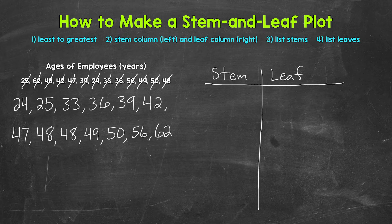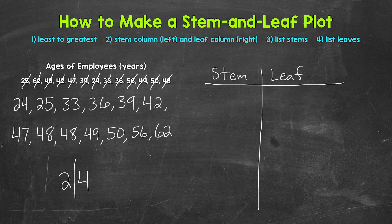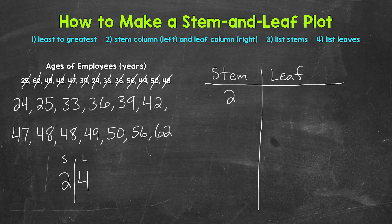With stem and leaf plots, we split each value — so each age for this example — into a stem and a leaf. For example, let's take 24 years old. We're going to split that value into a stem and a leaf: stem on the left, leaf on the right. Our stems will be the tens digits, and we will go from 2 to 6, the 20s to 60s. Let's list our stems in order: 2, 3, 4, 5, 6.